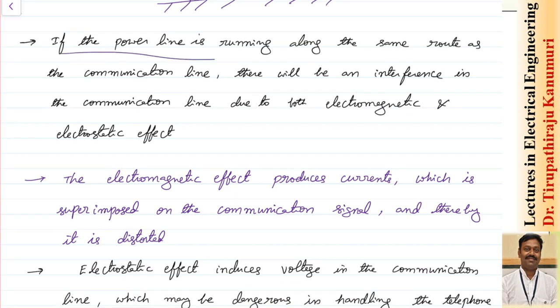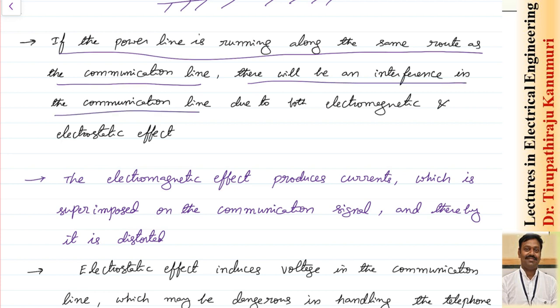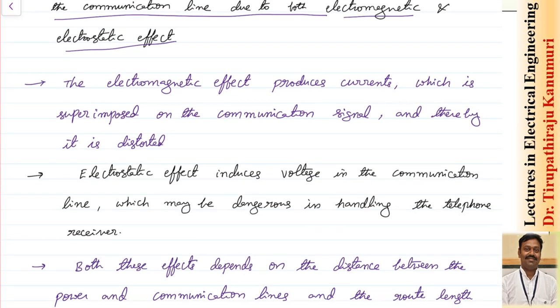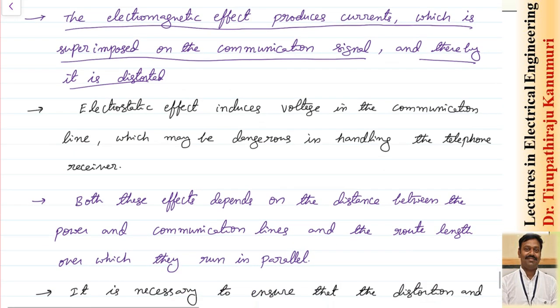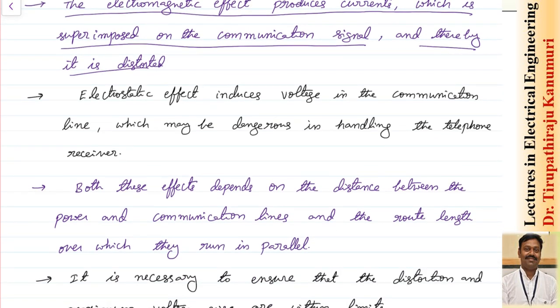If a power line runs along the same route as the communication line, there will be interference due to both electromagnetic and electrostatic effects. The electromagnetic effect produces currents which are superimposed on the communication signal, thereby distorting it. Whatever signal you transmit gets distorted due to the electromagnetic effect.